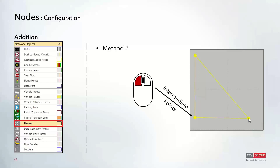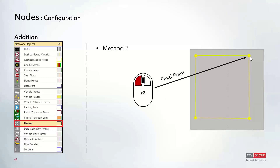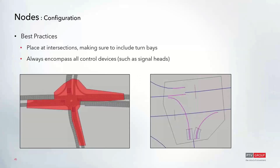Once you've reached the last point and are done creating the node, double-clicking will complete it and open the node window for additional configuration. When adding nodes around intersections, it's important to include any turn bays, and also to place nodes such that control devices like stop signs and signal heads are located within the node. This is especially important for evaluations because some data is collected starting from that control device location, so those items need to be within the node for evaluations to be collected from the proper location.